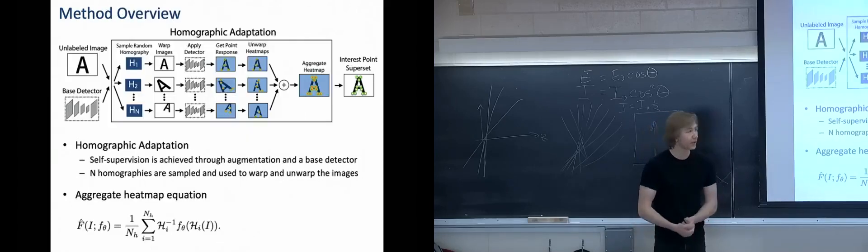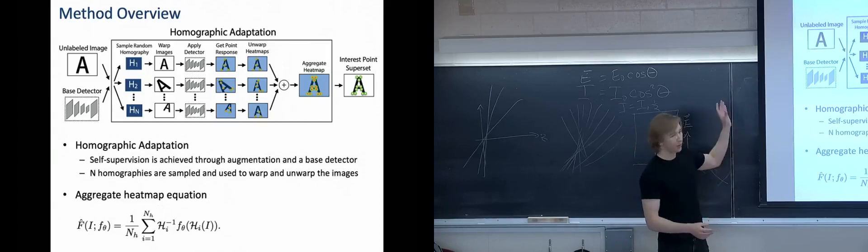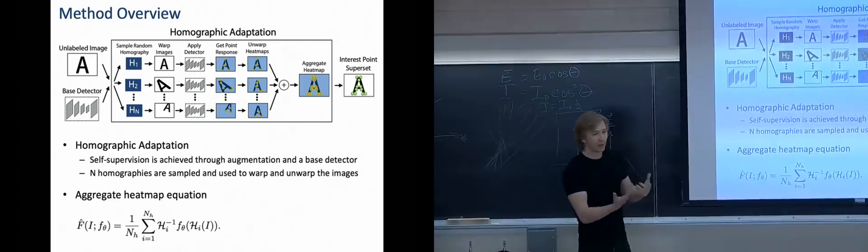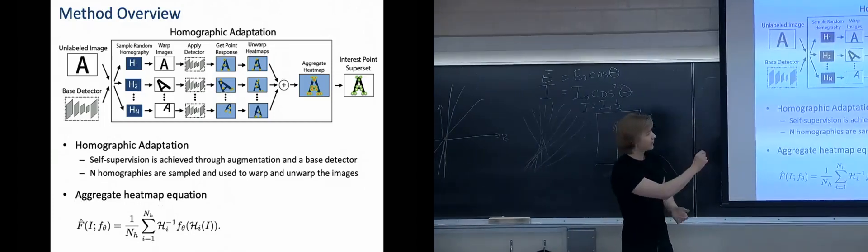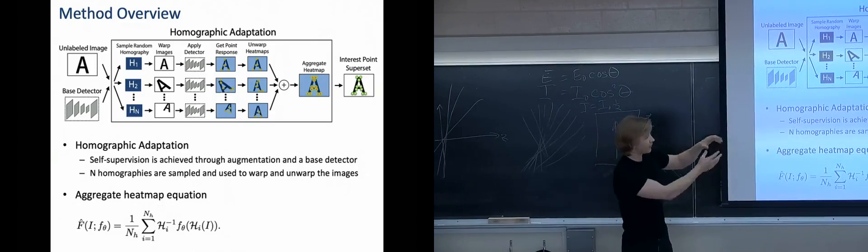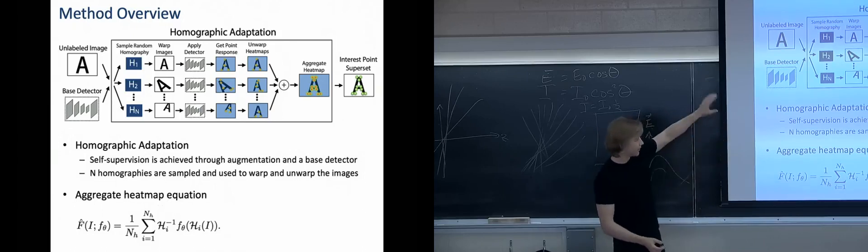So homographic adaptation is this technique where you have your unlabeled image and you have your base detector and you're going to obtain pseudo-ground truth labels by using your base detector on your unlabeled image. Now if you just directly apply your base detector to achieve your labels, that might not be very good because then you would just learn what your base detector does. So instead what they do is apply n random generated homographies to your unlabeled image to warp it, then they would apply the base detector to those warped images, get those point responses, and then unwarp it according to the inverse of the homography, and then finally aggregate all those together to achieve your final heat map.